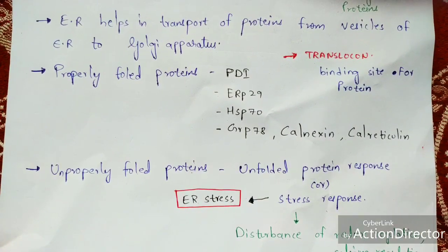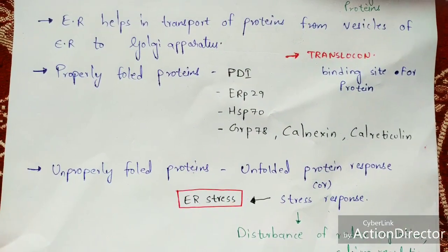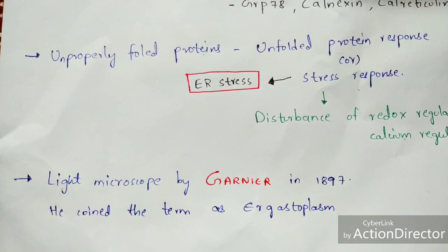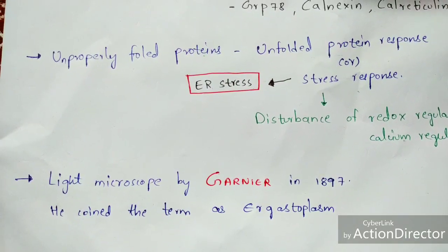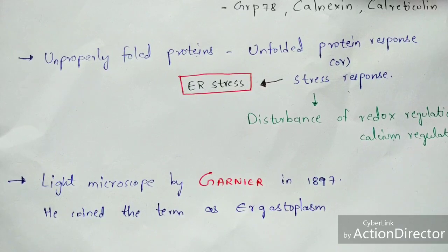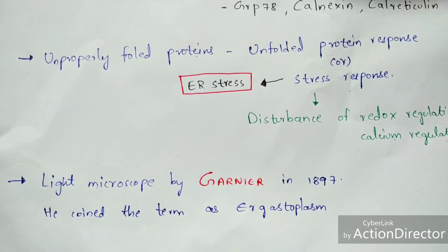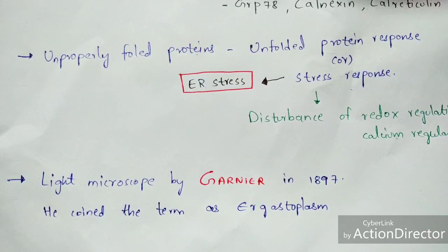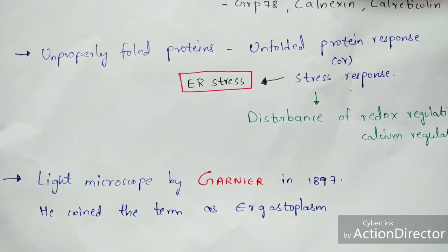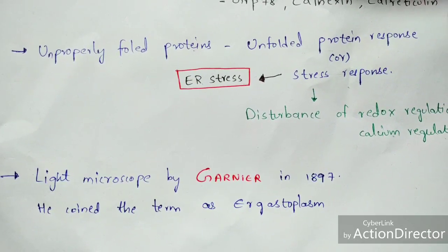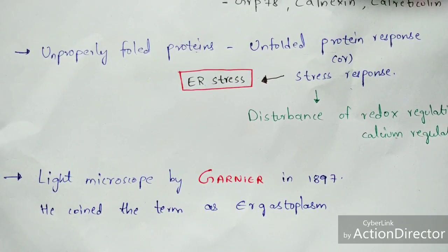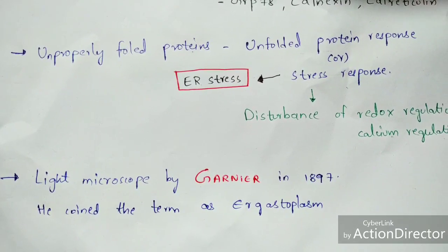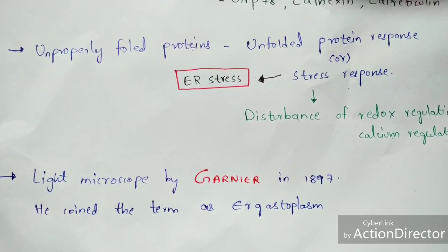The endoplasmic reticulum was first discovered through a light microscope by a scientist called Garnier in 1897, who coined the term ergastoplasm. Later, other scientists discovered protein transport, and the term was changed from ergastoplasm to endoplasmic reticulum.